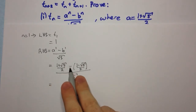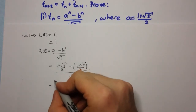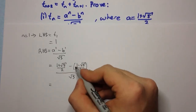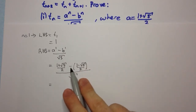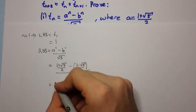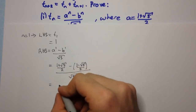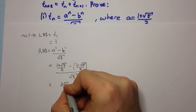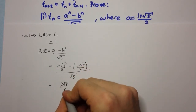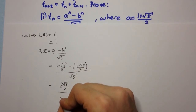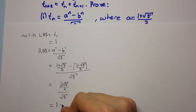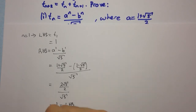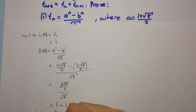(1 minus root 5) over 2, and this is all over root 5. Here we can distribute the minus through, and we'll get 1 minus 1, which is 0, and root 5 minus minus root 5, so that's root 5 plus root 5, which is 2 root 5, over 2, and all over root 5, and this of course is equal to 1. So this is equal to the left-hand side. Therefore, true for n equals 1.